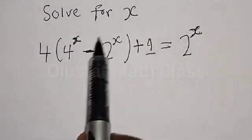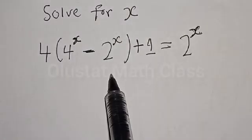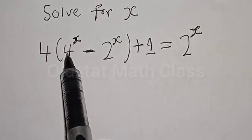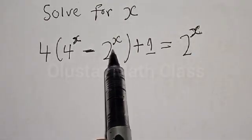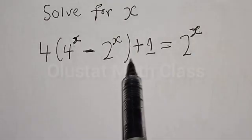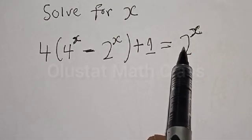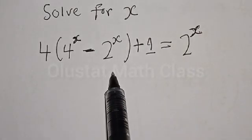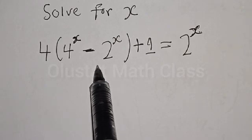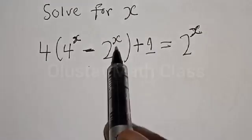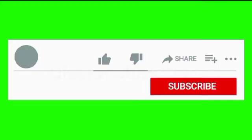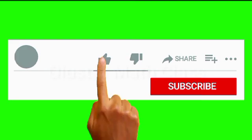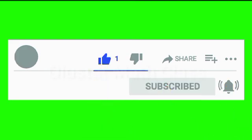Solve for s: 4 times [4 raised to power s minus 2 raised to power s] plus 1 is equal to 2 raised to power x. Welcome to my class. In today's class we will find the value of s from this given exponential equation. Please don't forget to like, share, comment and subscribe.